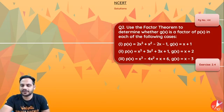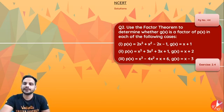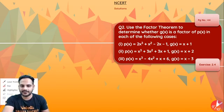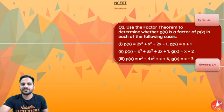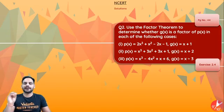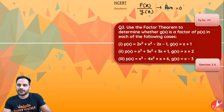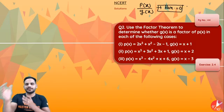The question says: use the Factor Theorem to determine whether g(x) is a factor of p(x) in each of the following cases. According to the Factor Theorem, g(x) will be a factor of p(x) if, when p(x) is divided by g(x), the remainder is equal to 0. The Factor Theorem is a special case that comes from the Remainder Theorem.